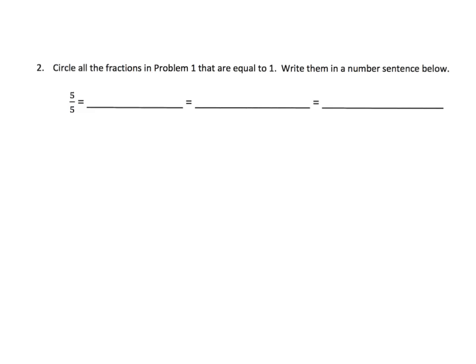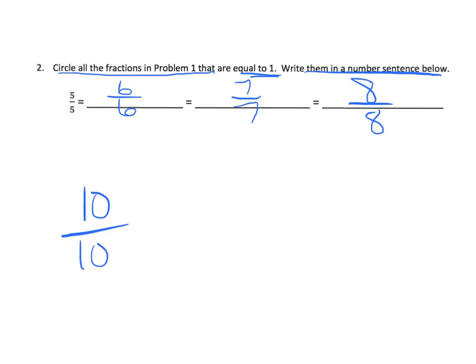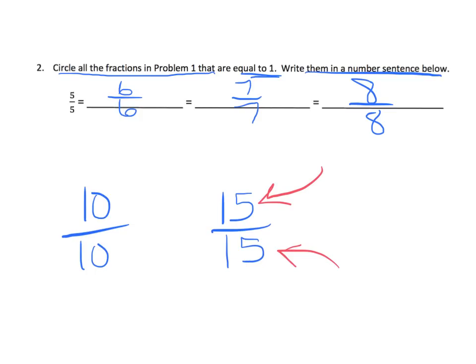Now we're going to make that pattern obvious. Circle all the fractions in problem one that are equal to one, and write them in the number sentence below. Six-sixths, seven-sevenths, eight-eighths — we could have done ten-tenths, fifteen-fifteenths. The numerator tells you how many pieces you have, and when you have all fifteen out of fifteen, you have one whole. All of these fractions are equal to one whole.